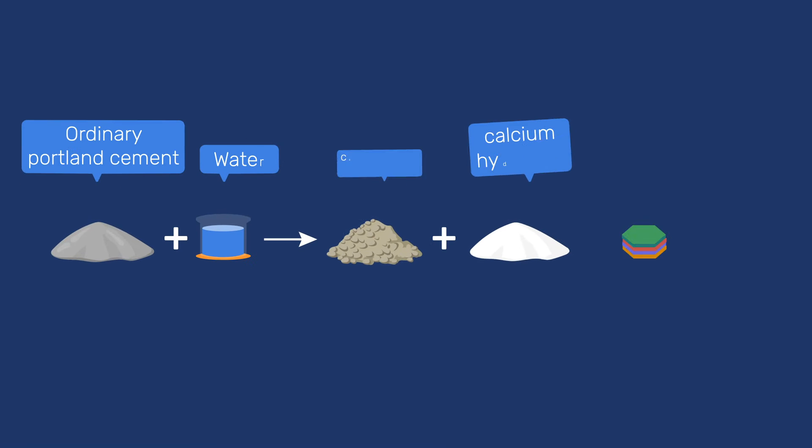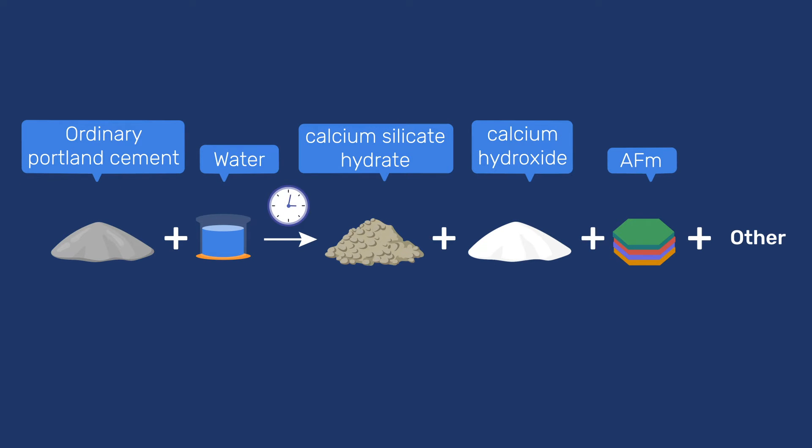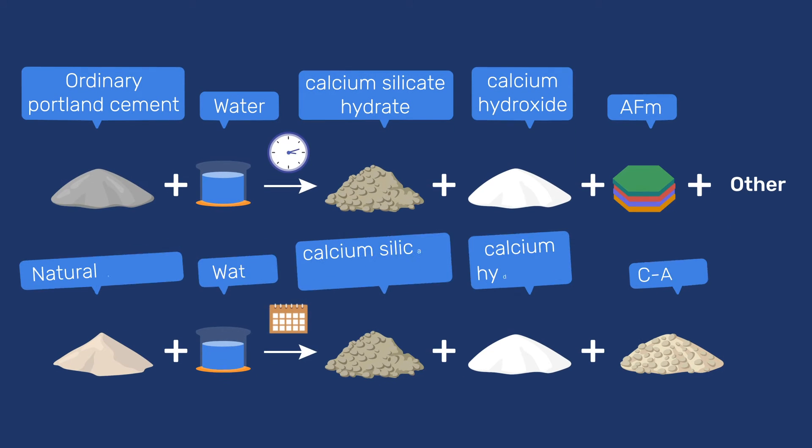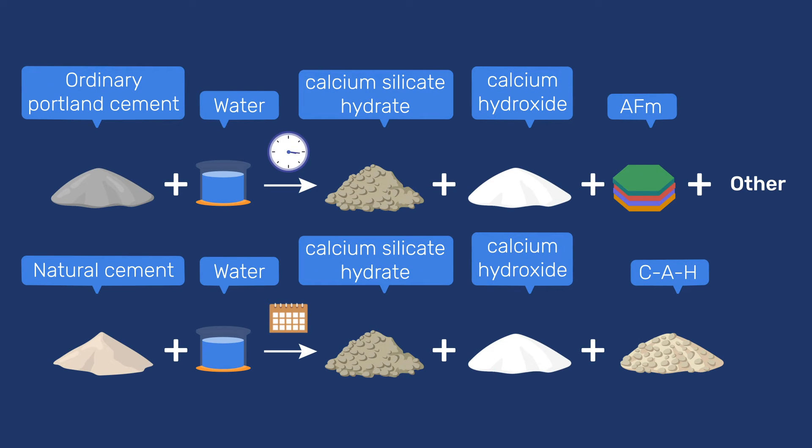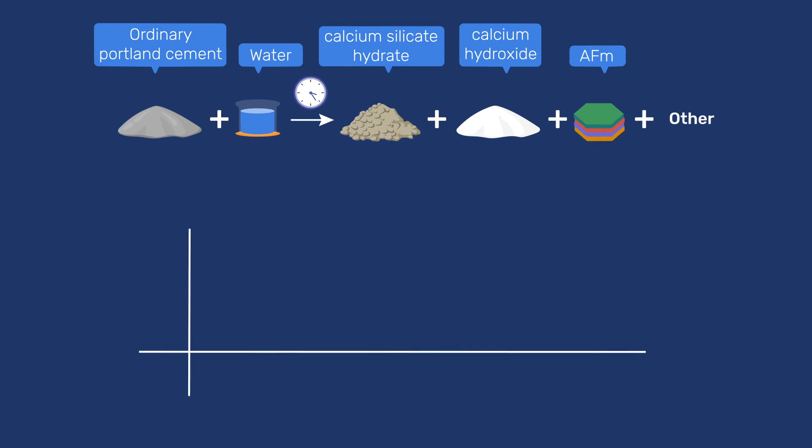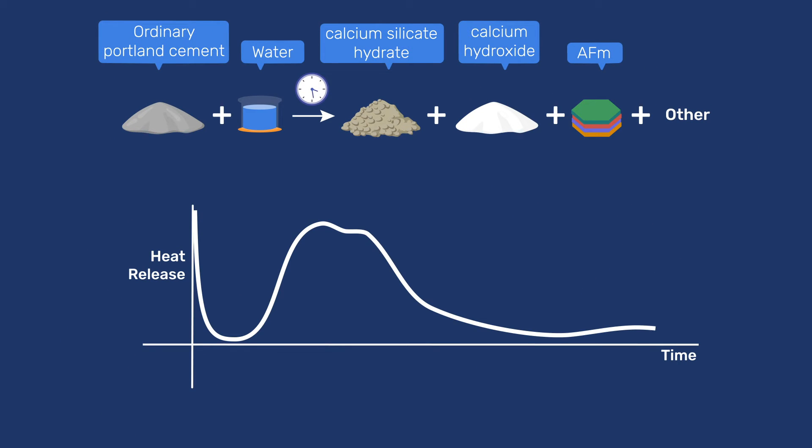An important reason for the success of OPC is that it not only binds a lot of water, but does so at a much faster rate than natural cement. Because this reaction is exothermic, it can be well followed by isothermal calorimetry, which essentially provides a fingerprint for hydration kinetics, as shown here.